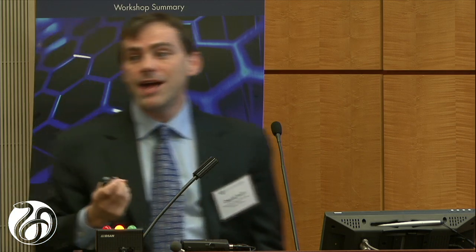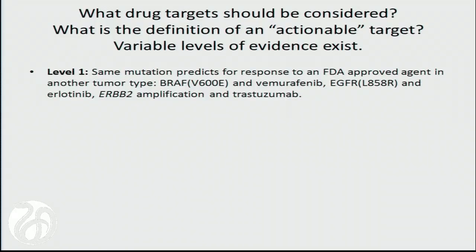One of the controversies is: how do we actually define what targets would be amenable to this approach? How do we define that something is actionable? Levi introduced the concept of actionability. Using a similar system to what we use for advanced cardiac life support in terms of level of evidence: level one evidence for this type of approach would be that you have the same mutation predicting response to an FDA-approved agent in another tumor type — for example, V600E BRAF with vemurafenib, L858R EGFR with erlotinib, or ERBB2 amplification with trastuzumab.